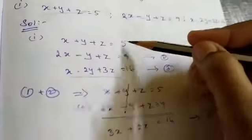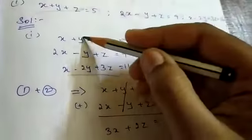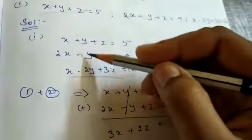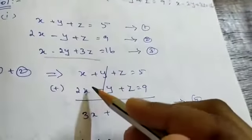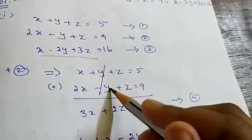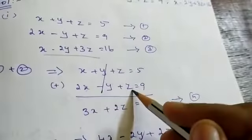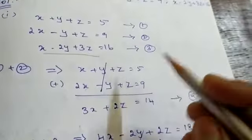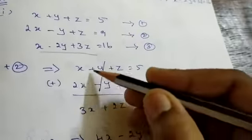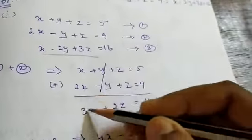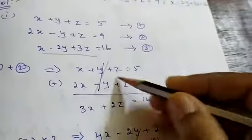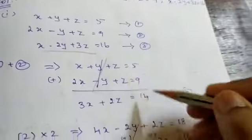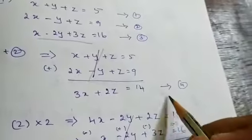We are adding equations 1 and 2, because plus y and minus y will get cancelled. So x and 2x, y and minus y, z and plus z equal to 5 plus 9. This gives 3x plus 2z equal to 14. This is equation number 4.